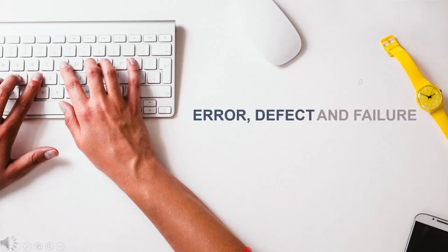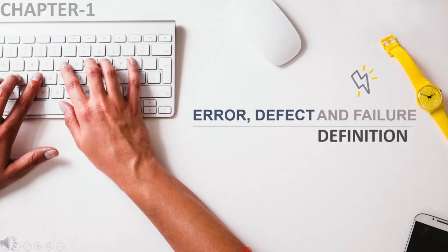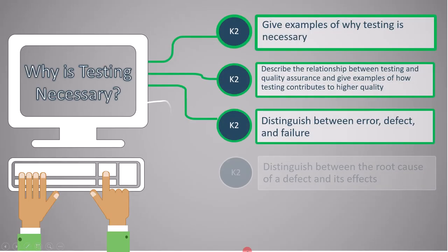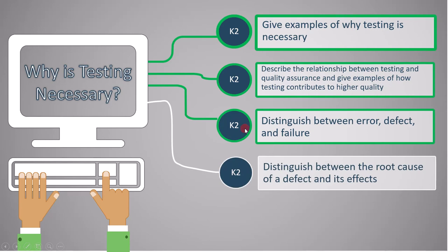In this lecture, we will cover error, defect, and failure. The learning objective is to distinguish between error, defect, and failure. This topic is marked as K2.